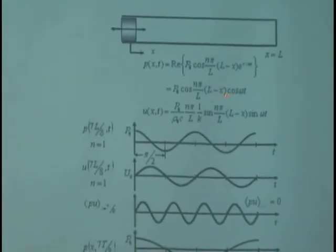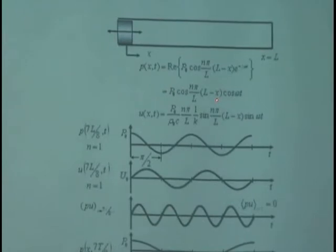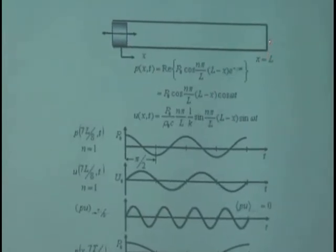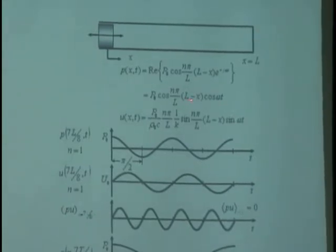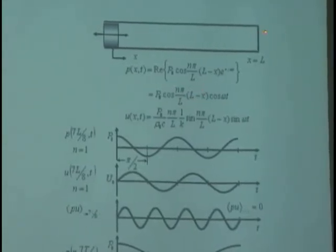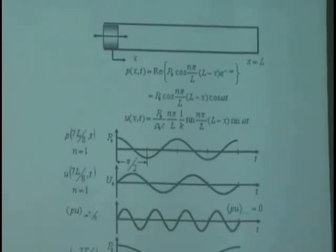First, I want to look at the pressure from x equal l to match the boundary condition. The boundary condition over here is the pressure would be maximum on the wall.